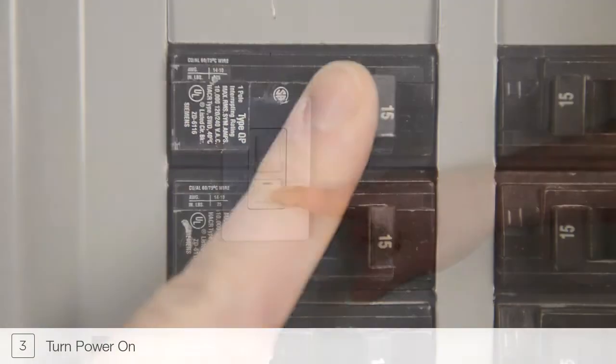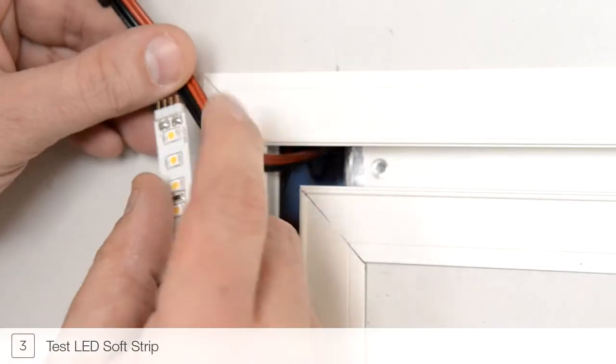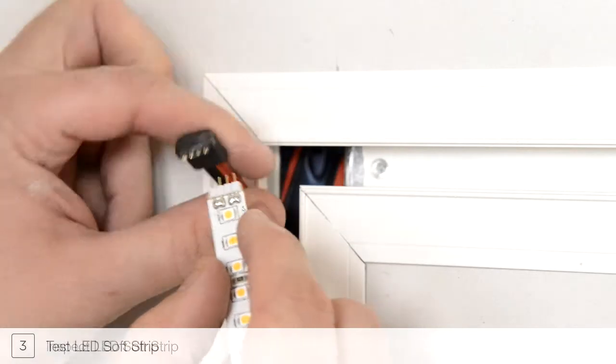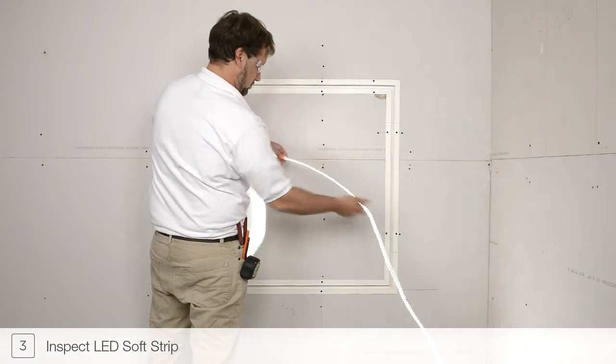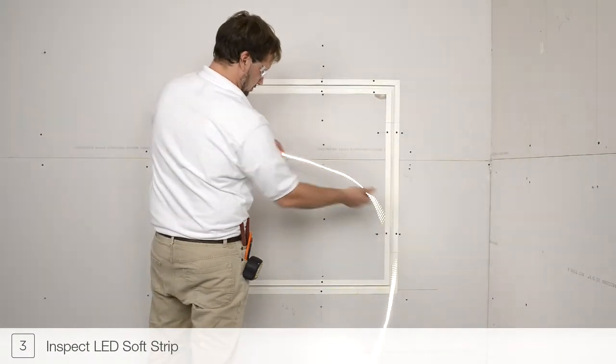Restore power to the junction box to test the LED soft strip. It is important to align the plus 24 VDC marking on the soft strip with the red wires of the power feed cable. Inspect the strip for any irregularities before continuing.